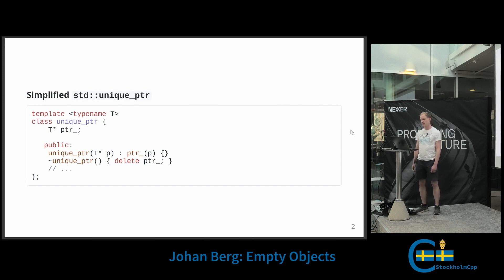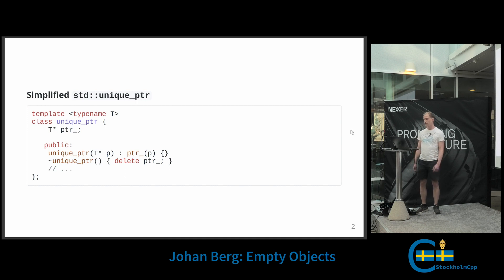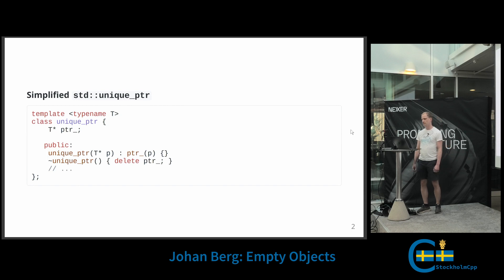This works on pointers allocated with new, but maybe we want to use a pointer that we can't call delete on — for example, a file pointer. For a file pointer we would like to call close in the destructor instead of delete. So we need some way to let the user customize the behavior on destruction, and to do that we can use what's known as a policy-based design.